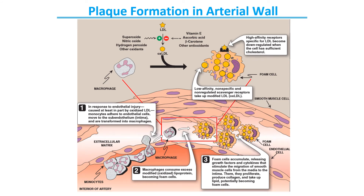Next is plaque formation in the arterial walls, an important concept for understanding atherosclerotic disease — which in simple terms causes heart attacks. It blocks blood supply in the arteries, and if those arteries supply the heart it results in myocardial infarction; if they supply the brain it can cause a stroke. This whole process is related to the LDL molecules we just discussed.